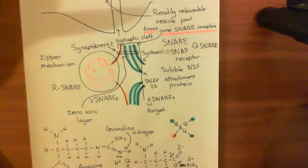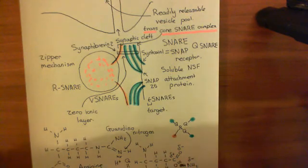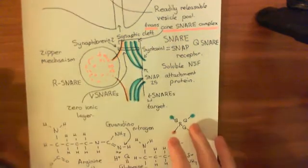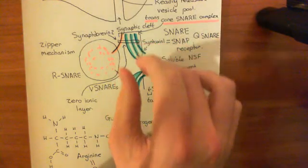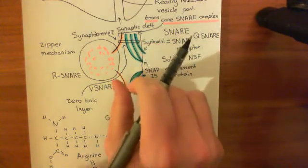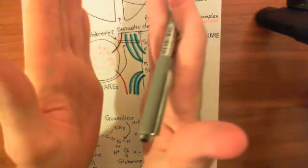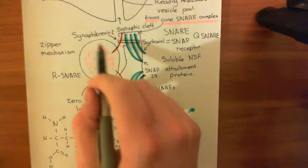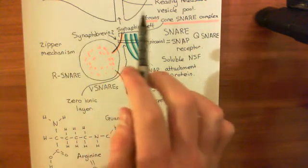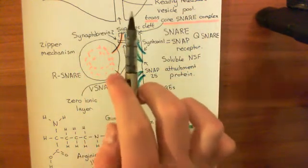Now, these alpha helices, as I've said, they bind together through this zero ionic layer. They also spin around one another to form this sort of zippering-up mechanism. So what happens is these gradually zipper up. And as you can imagine, that's going to bring the membrane of the plasma, of the cell rather, closer and closer to—well, it's going to bring the membrane of the vesicle closer and closer to the membrane of the cell. So it's going to keep these very nice and close together.